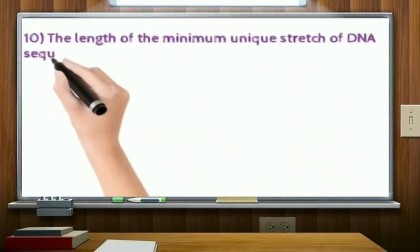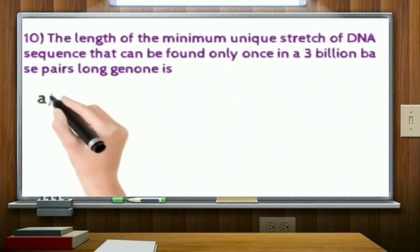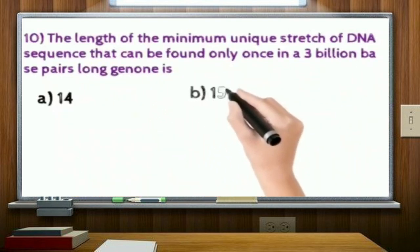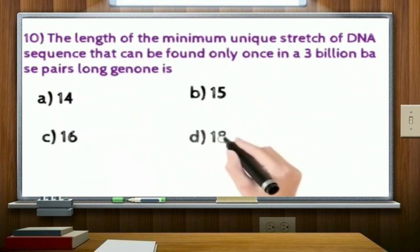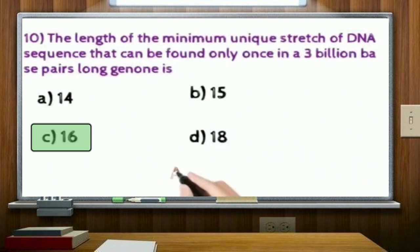The length of the minimum unique stretch of DNA sequence that can be found only once in a 3-billion base pair long genome is: option A, 14; option B, 15; option C, 16; and option D, 18. Correct answer: option C.